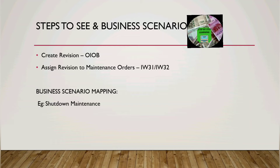Whenever I need to list out what maintenance orders were created for the shutdown, I can go to IW38 or IW13 and filter by that revision number to list all maintenance orders created for the specific shutdown. It is also possible to settle costs to a different settlement receiver for the shutdown maintenance. That is the main purpose of creating revisions — they can be specifically mapped to shutdown maintenance.